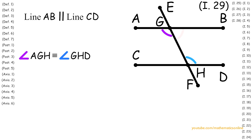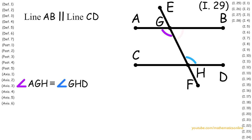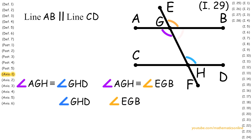Next, by Proposition 15, the vertical angles AGH and EGB must be congruent. Since angle AGH is congruent to angle GHD, then by Axiom 1, angle GHD is congruent to angle EGB.